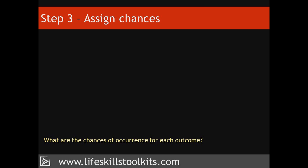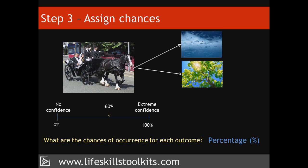The next step in developing a risk profile is to determine the chance of each outcome occurring. For the purpose of making decisions during uncertainty, chance is thought of as the likelihood of an outcome occurring, and this likelihood is expressed as a percentage. If a weather forecast predicts a 60% chance of rain, this is the same as saying there is a 60 in 100 chance of rain. The higher the percentage, the greater the certainty that an outcome will occur; the lower the percentage, the lower the confidence in the outcome occurring. When working with alternatives that have more than one outcome, the sum of the chances for all outcomes must add up to 100%.